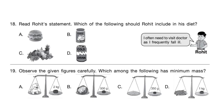Question 19: Observe the given figures carefully. Which among the following has minimum mass? The correct answer is option C — 350 grams, which is the minimum.